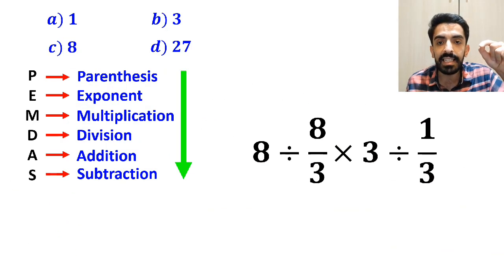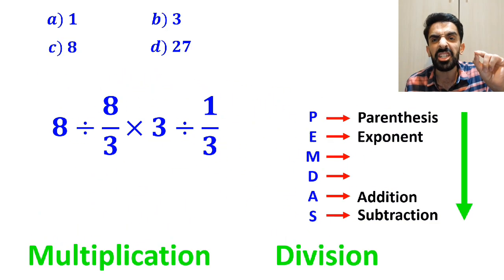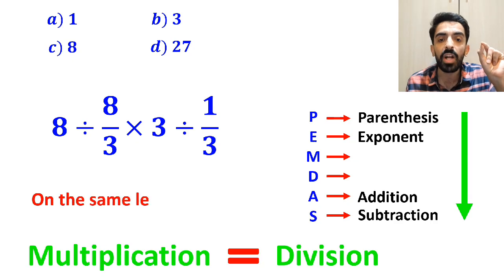Alright, as you can see in the image, in this expression we have two division signs and one multiplication sign. It is very important to remember that multiplication and division are on the same level of precedence.